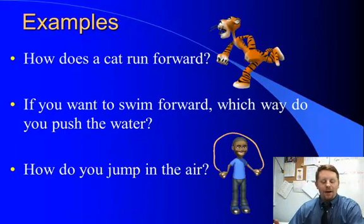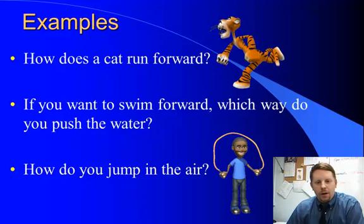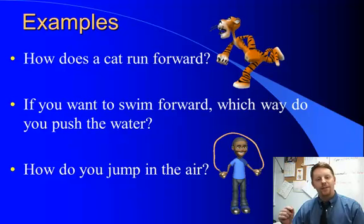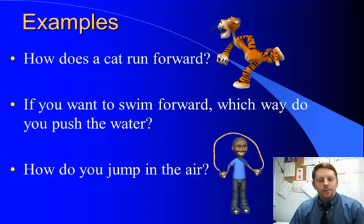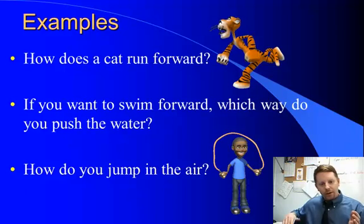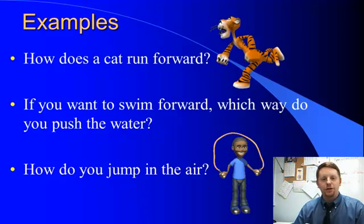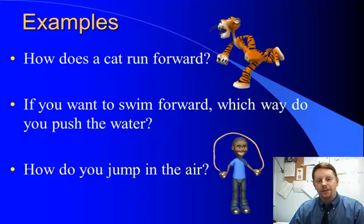For example, a cat running forward — to move forward, what a cat really does is push backwards on the ground, and the ground pushes the cat forward. Newton's third law. If you want to swim forward, which way do you push on the water? You push backward on the water and the water pushes you forward — Newton's third law in action again. Or how do you jump in the air? If you want to jump up, you push down with your legs, and the reaction of the ground pushing on you propels you up into the air.